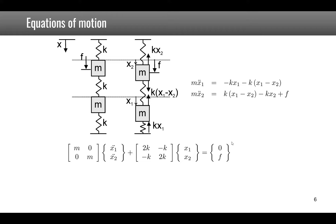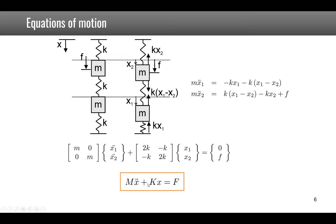The equations of motion can be rewritten in matrix form: one matrix times a vector of accelerations and one matrix times a vector of displacements, plus a force vector. The general notation is a mass matrix M times an acceleration vector x-double-dot, plus a stiffness matrix K multiplied by the displacement vector, equal to a force vector.